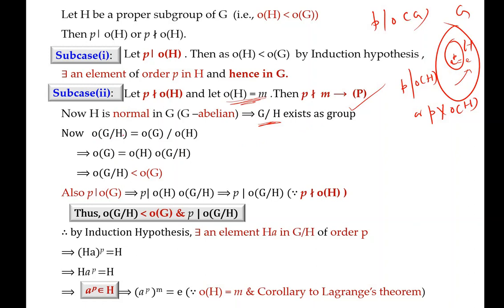Consider the order of G/H, which equals |G| divided by |H|, since G is finite and we can use this as a formula. The order of G/H is the index of H in G, the number of distinct cosets of H in G. Cross-multiplying, the order of G equals |H| times |G/H|. This implies that the order of G/H is strictly less than the order of G, since |H| > 1.